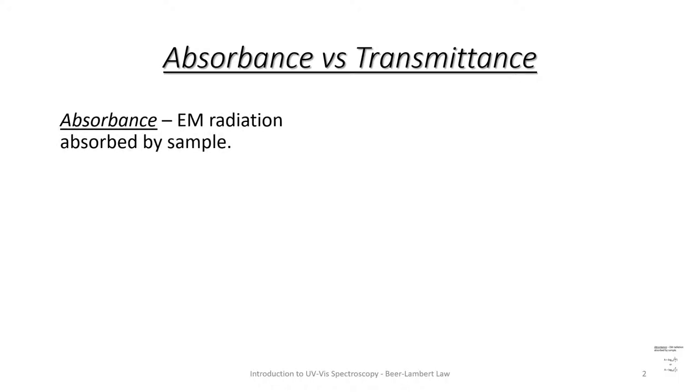Absorbance is the light that is absorbed by a sample. A equals the log of the light going in divided by the light going out, or A equals the log of 1 over transmittance.